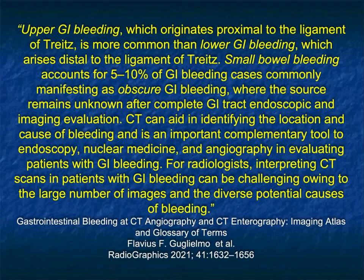In this article by Guglielmo, upper GI bleeding originating proximal to the ligament of Treitz is more common than lower GI bleeding. Small bowel bleeding accounts for up to 10% of GI bleeding cases, commonly manifesting as obscure GI bleeding. Small bowel tumors, for example, can be hard to detect, and evaluation whether with endoscopy or imaging can be difficult.